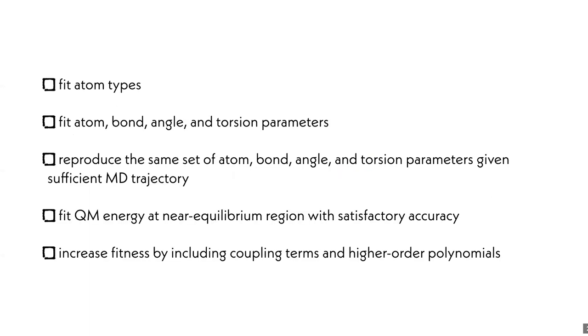There is a wish list that we hope to achieve by the end of the project. We want to know whether graph nets can fit atom types, whether they can fit atom, bond, angle, and torsion types and therefore parameters, and whether we can reproduce the same set of parameters given sufficient MD trajectory. If we prove we can do very well on MD energies and forces, we can move on to QM, which we really care about, whereas MM is just a sanity check. Finally, such neural parameterization schemes afford us the ability to expand the complexity of the functional form. For example, we can include terms that are used in MMFF or other classical force codes that have been proven to increase fitness between MM and QM but are too difficult to parameterize manually.